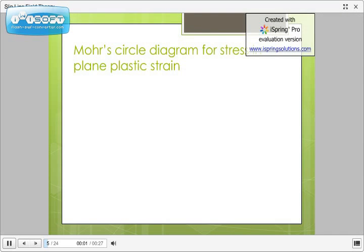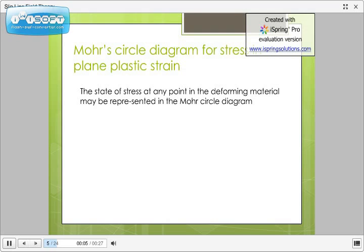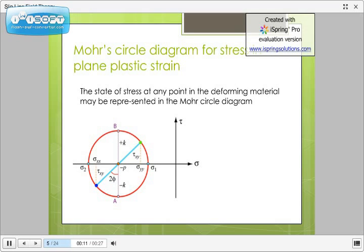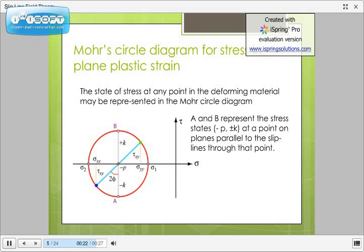We now look at the Mohr Circle diagram for stress in plane plastic strain. The state of stress at any point in the deforming material may be represented in the Mohr Circle diagram. In this diagram, P shows the hydrostatic pressure, K shows the pure shear strength, sigma 1, sigma 2, sigma 3 are principal states of stresses. Whereas A and B represent the stress states at a point on planes parallel to the slip lines through that point.